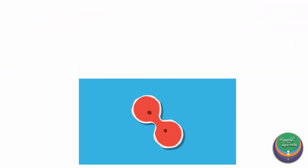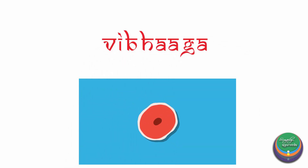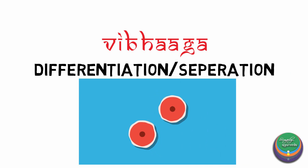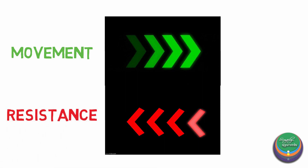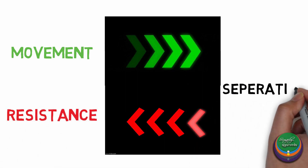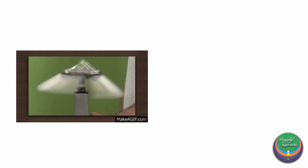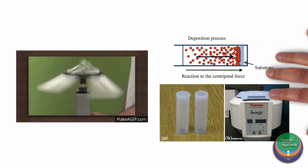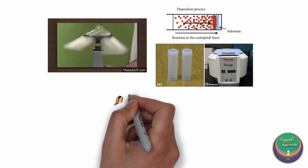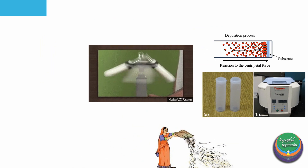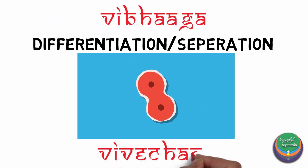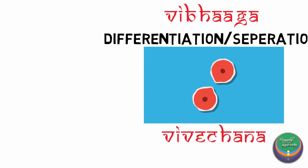Understanding Vayu as movement is more interesting when we look into the major function of Vayu, which is Vibhaga. Wherever there is movement, there will be resistance or friction which develops, and this resistance causes separation. This is similar to how serum and cells separate after centrifugation, or how husk is separated from grains during the process of winnowing. Hence, Vibhaga or Vivechana is an essential function of Vayu.